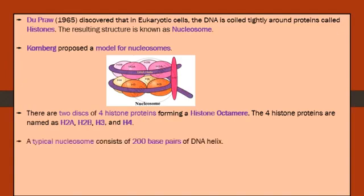A typical nucleosome consists of 200 base pairs of DNA helix wrapped around the histone octamer. The DNA wraps around the eight histone proteins of the octamer.